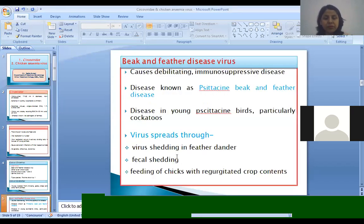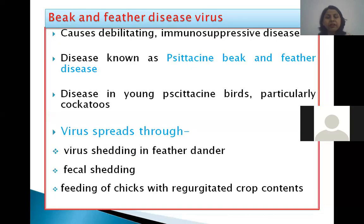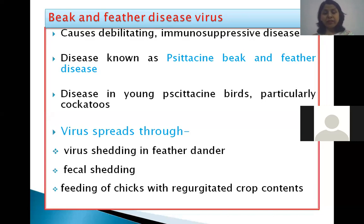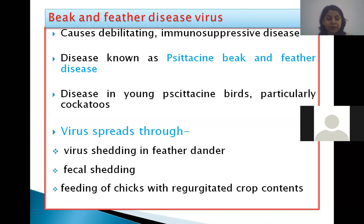Coming to the beak and feather disease virus — it causes a debilitating and immunosuppressive disease, and mainly causes disease in young psittacine birds, particularly cockatoos. Cockatoos are a species of parrot and the disease is known as psittacine beak and feather disease. Virus shedding occurs in feather dander, and fecal shedding of the virus also occurs. In poultry, there is a habit of regurgitating crop content, and when virus is present in the regurgitated crop content and spread by the chicken, chicks also get infected.